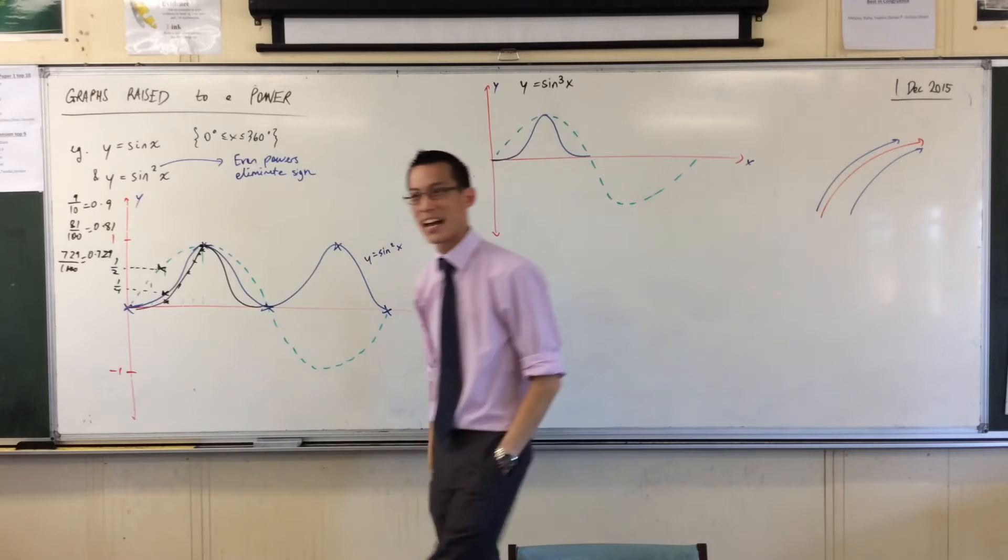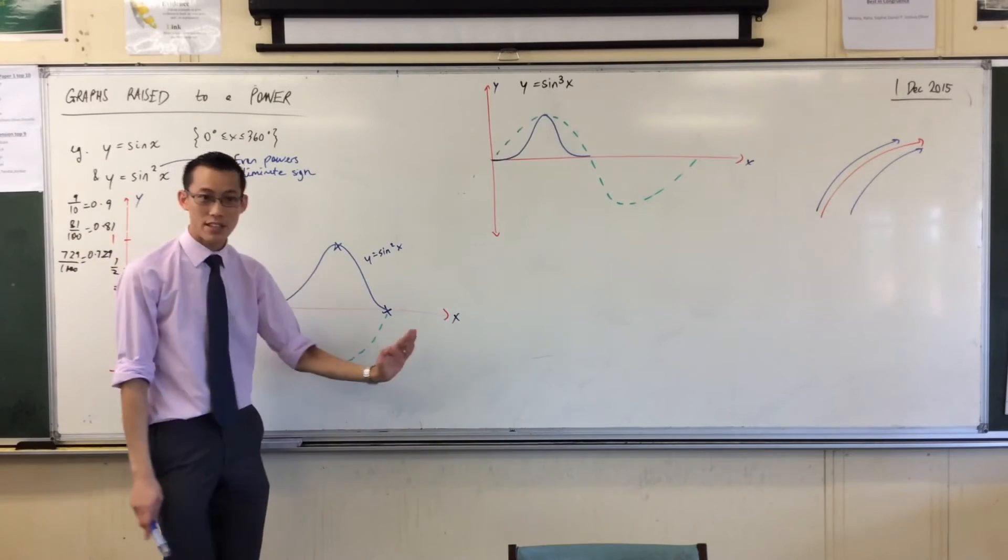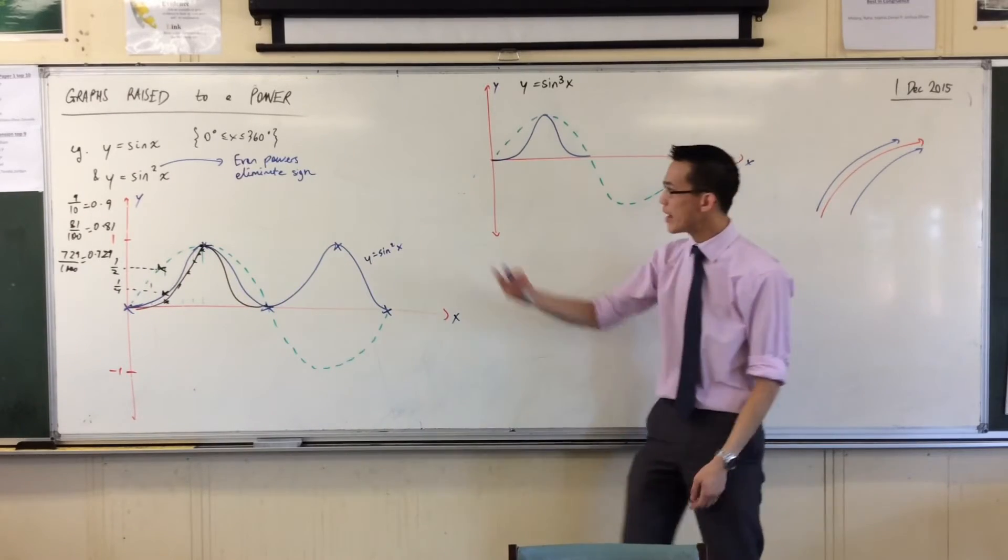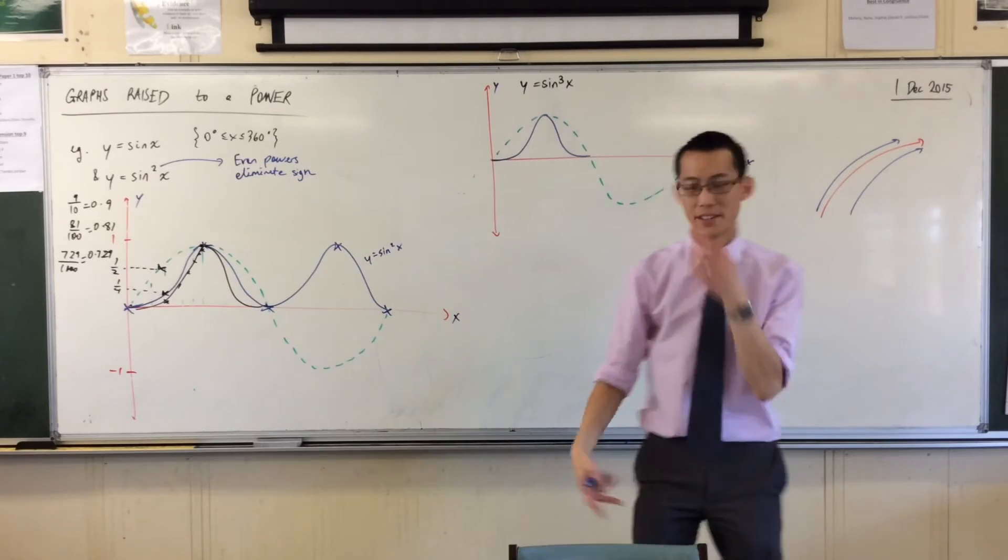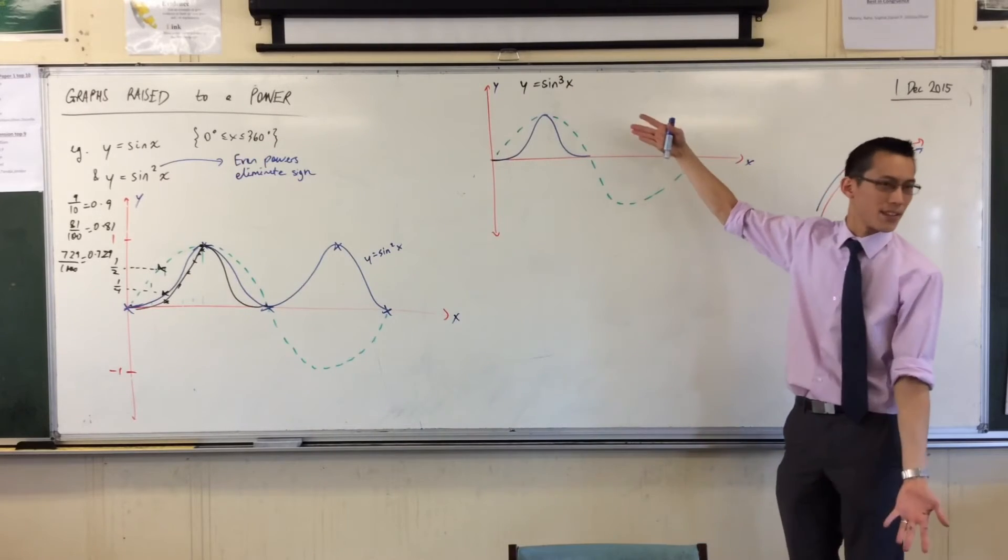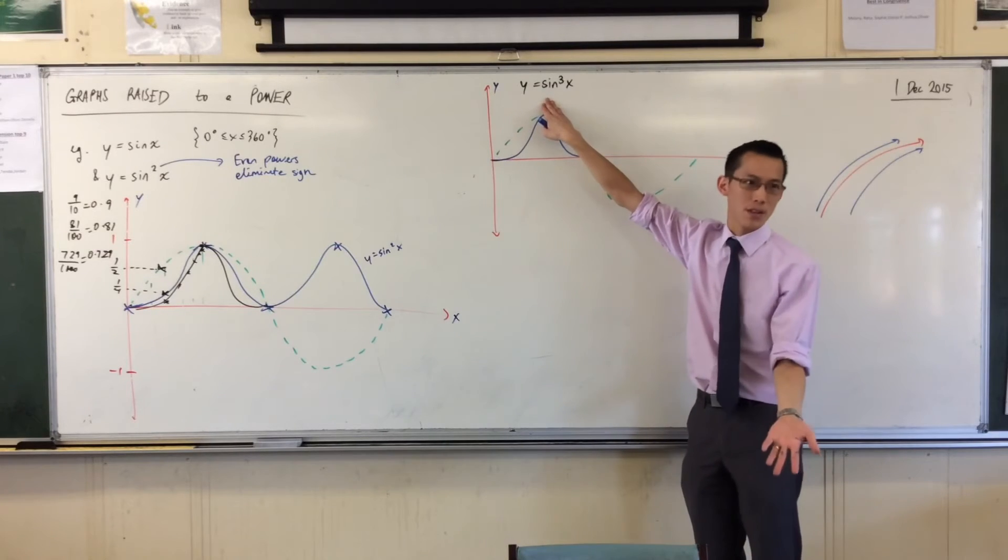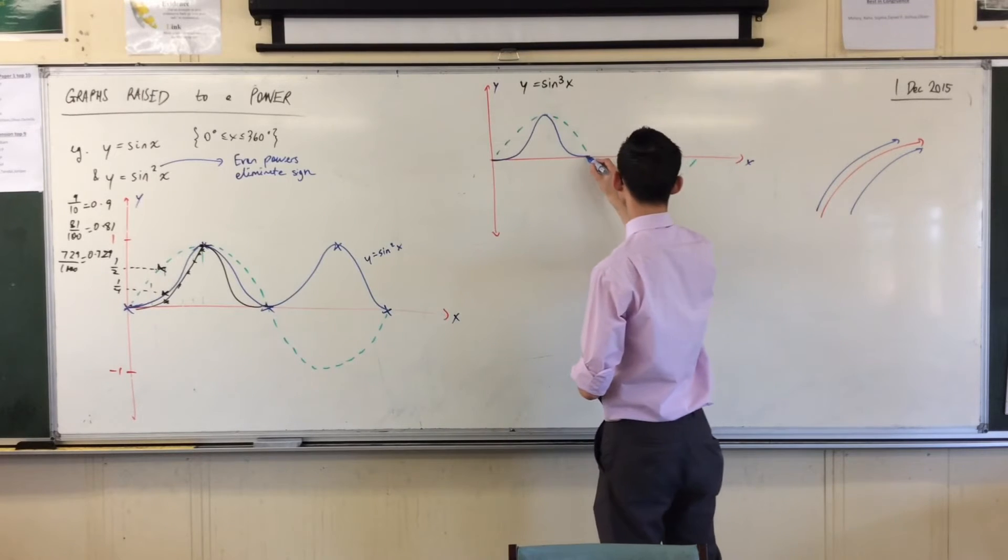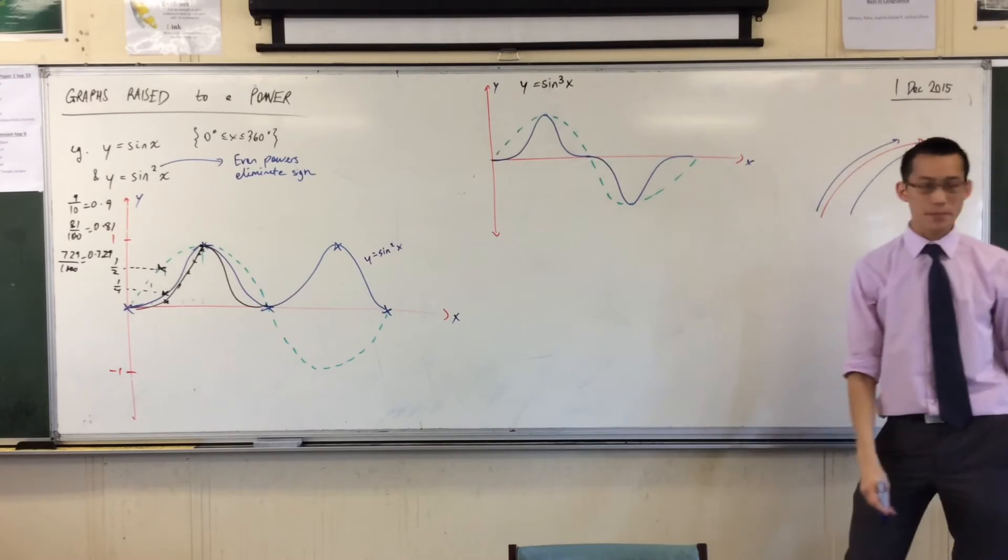But then something quite different happens when I cross over 180 degrees and go from 180 to 360. What's different? It's going to go underneath, right? Because we're squaring. I've got even powers, so you're going to get even numbers of negative signs. But you don't get even numbers of negative signs here, right? If sine x is negative, the cube of sine x will also be negative. So you're going to come down here like so. There you go, right?